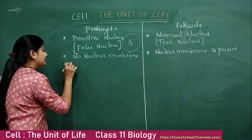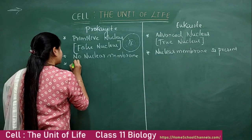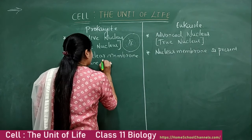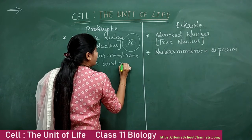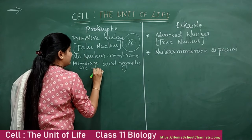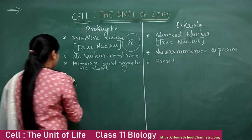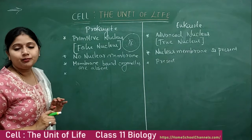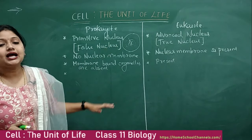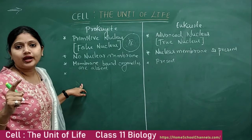Third difference: membrane-bound cell organelles are absent in prokaryotes, whereas in eukaryotes they are present. Regarding ribosomes — the non-membrane-bound organelle — ribosomes are present in both prokaryotes and eukaryotes, but the type differs.